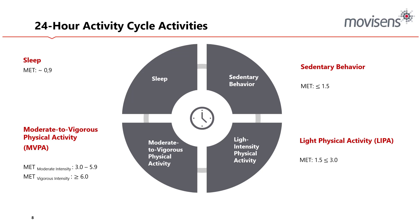The 24-hour activity cycle components are relatively clear to most in this field. Sleep has a MET of approximately 0.9; sedentary behavior a MET of less than or equal to 1.5; light physical activity is typically the sticking point — we use a framework of 1.5 to less than or equal to 3 MET; and moderate to vigorous physical activity is anything over 3 MET, with vigorous being over 6 MET.